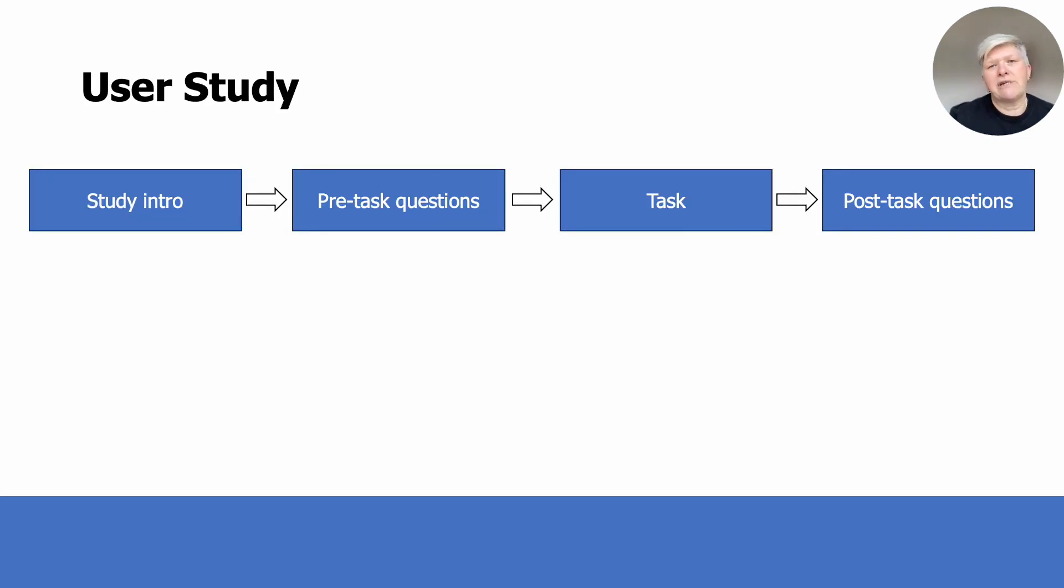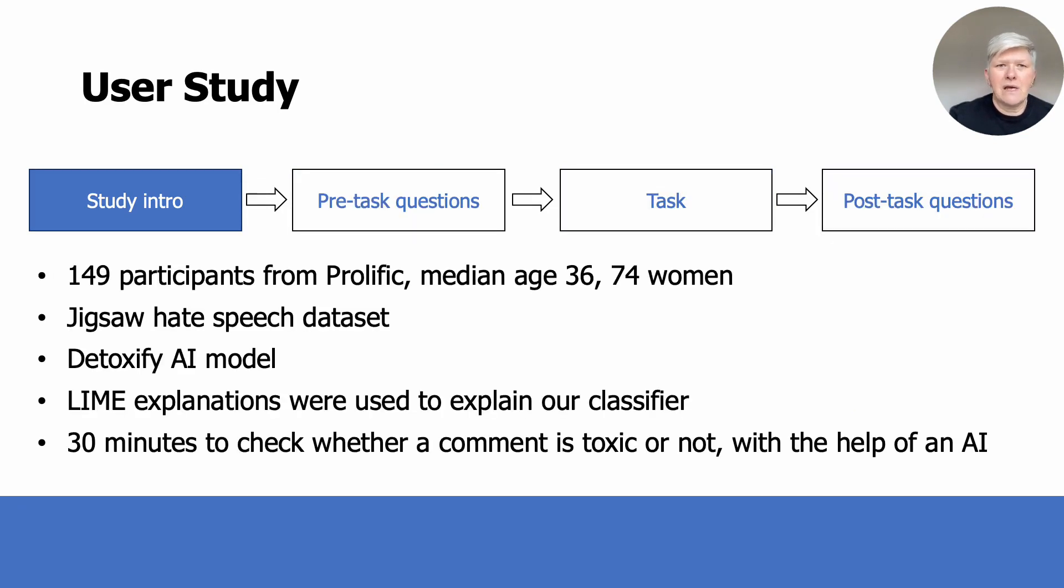We conducted an empirical user study which can be characterized in four steps. We used 149 participants with a median age of 36, of which 74 were women, from Prolific. We situated our task in hate speech detection and employed the well-known and publicly available Jigsaw hate speech dataset. This contains 220,000 Wikipedia edit comments which have been labeled by human raters for toxic behavior.